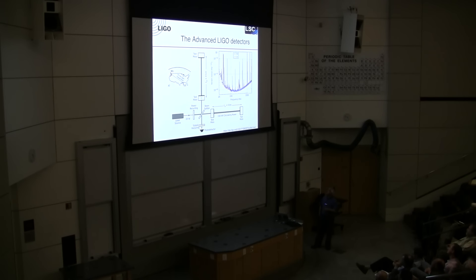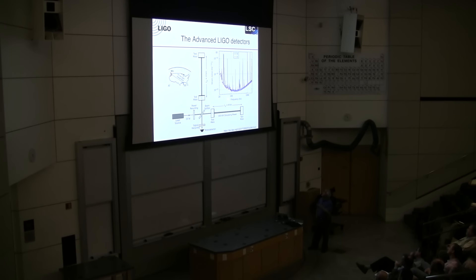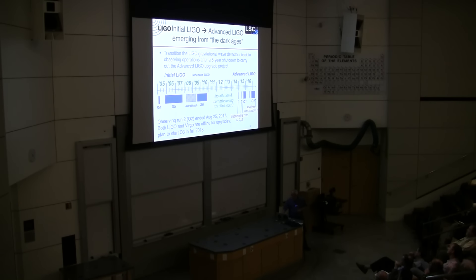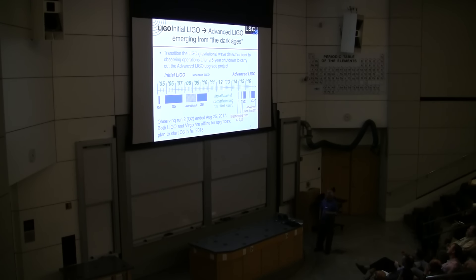You can see lots of spectral lines. The ones you can see are all well understood — things like the fibers used to hold up the mirrors produce violin modes, there's 60 hertz and multiples, and there are calibration lines. All the lines are understood and can be modeled and don't really disturb our ability to detect gravitational waves very much at all. We've been operating the LIGO detectors now for almost 20 years.